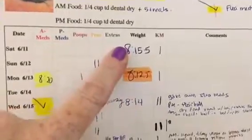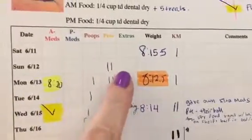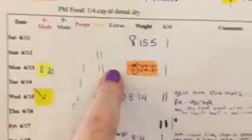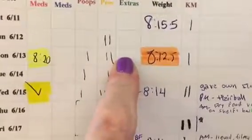She checked in at 8 pounds, 15 and a half ounces. Monday, she was down just a couple ounces to 8 pounds, 12 and a half ounces.